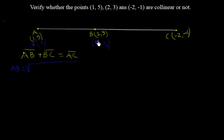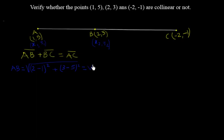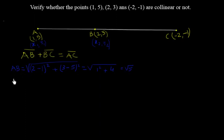So AB equals the square root of (2 minus 1) squared plus (3 minus 5) squared. That gives us the square root of 1 squared plus (-2) squared, which is the square root of 1 plus 4. The square of a negative also becomes positive, so it equals the square root of 5. The distance AB is √5.